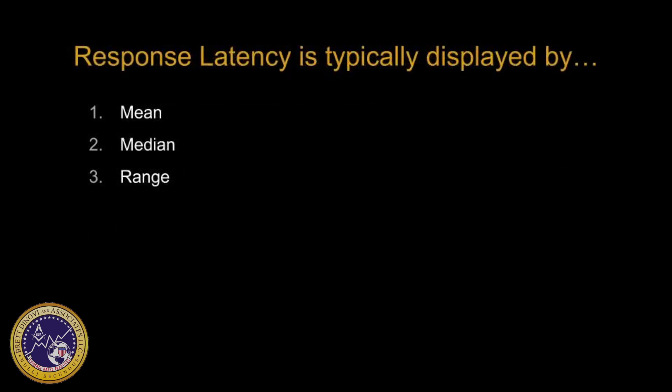Latency data is typically displayed by using range, median, or mean. The mean is the average of the total sum of time. The median is the duration lying in the middle of the full range of various times, and the range is the variation between the lower and upper limits of the recorded times.